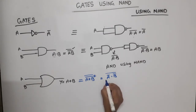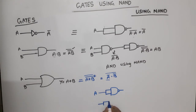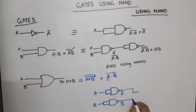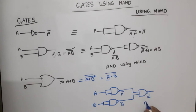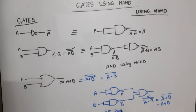To implement OR gate: we need A bar, so one NOT gate using NAND with input A. One more NOT gate using NAND with input B gives B bar. Now apply both to one more NAND gate. Output is A bar dot B bar bar, which by De Morgan's equals A bar bar plus B bar bar, which is A plus B. This is OR gate using NAND only.